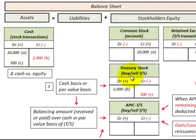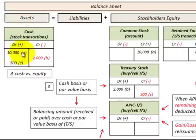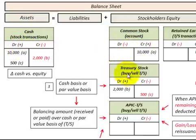Now let's look at where we would reissue this stock. We'd be reducing our Treasury stock by moving it into our common stock account. At the same time, we'd be increasing our cash account for the amount of cash we received when we issued that stock. So we would be increasing our cash while also increasing our stockholders' equity. You can see where this Treasury stock is a contra equity account.